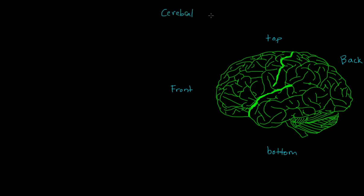You might notice something about the cerebral cortex right away, which is that it looks kind of wrinkly — and it actually is. Rather than having a smooth surface, it actually has a ton of bumps and folds. This is extremely useful because it allows the cerebral cortex to have greater surface area, room for more neurons, and an increased cellular mass.